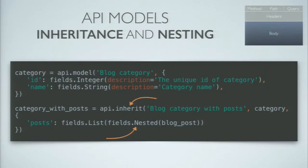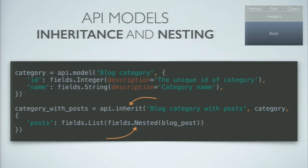API models are quite a bit more flexible because they allow inheritance and nesting. First I define a model called 'category', and then a model called 'category with posts'. Using the api.inherit method, the 'category with posts' model automatically inherits every field from 'category' and also includes the additional fields provided in the inheritance method. The field I'm extending with, called 'posts', is a nested field — actually a list of nested blog posts. So this model will expect to get an object which contains a list of other objects, which works very well for more complex cases.